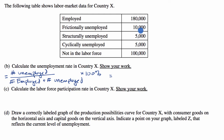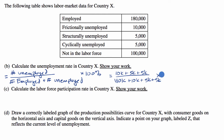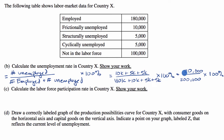Our number unemployed is going to be 10,000 plus 5,000 plus 5,000. So the number unemployed over number employed plus number unemployed, times 100%. This is going to be 0.10, and then times 100%, this is going to be equal to a 10% unemployment rate.